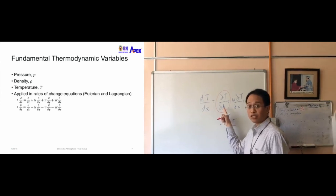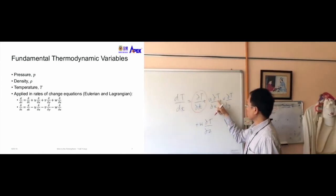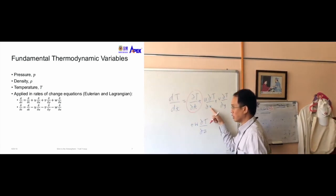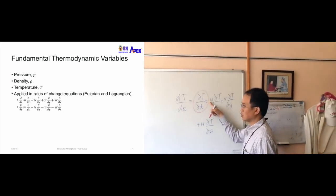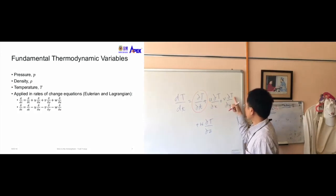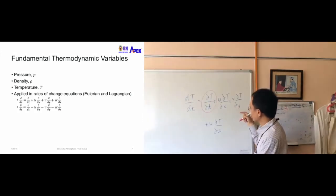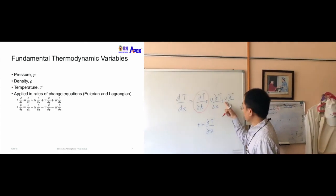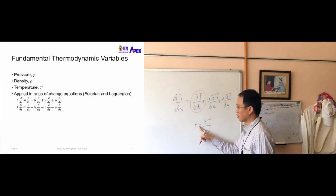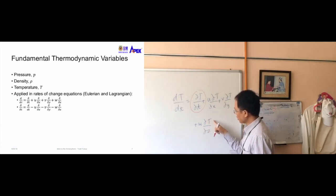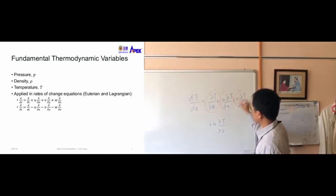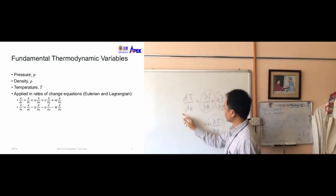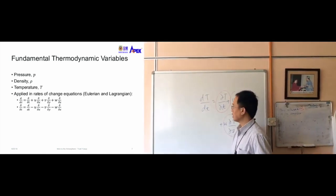This equation describes the total change of temperature with time: the local time change, plus the change of temperature in the zonal (east-west) direction multiplied by the zonal velocity, plus the meridional (north-south) change multiplied by the meridional velocity, plus the vertical change of temperature multiplied by the vertical velocity component. When all these terms are added together, they give the total rate of change of temperature.